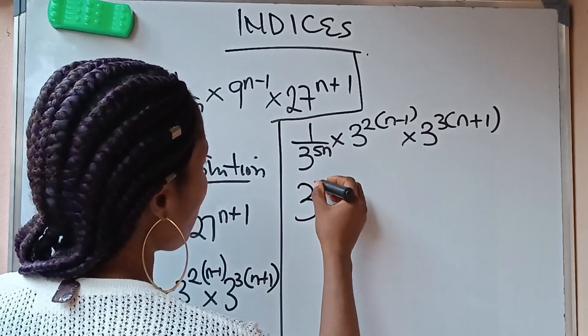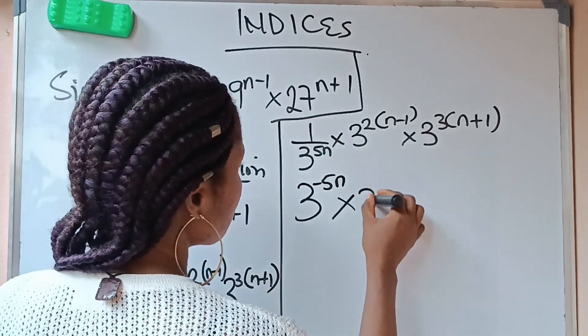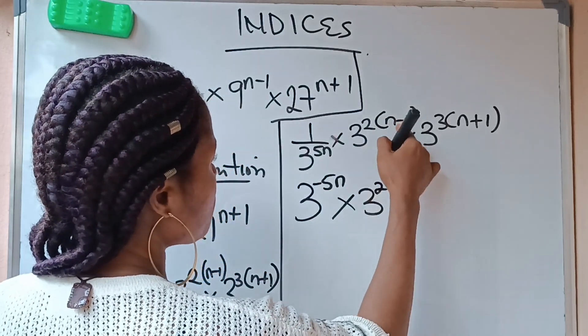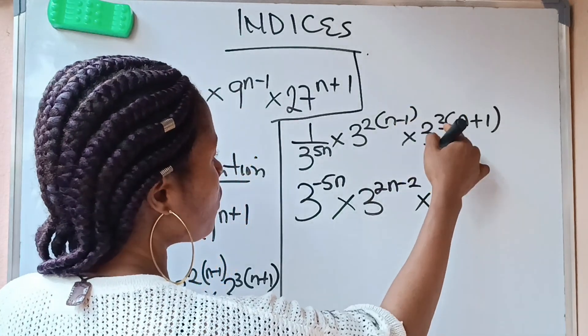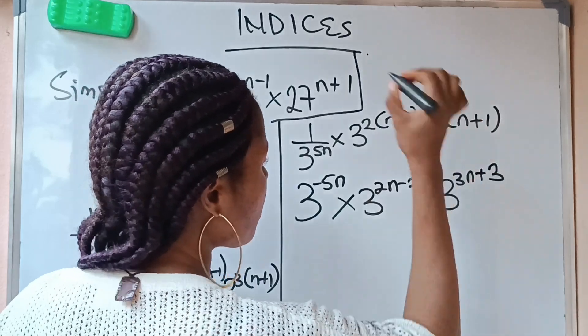So I'm going to write 3 raised to the power of minus 5n times 3 raised to the power of 2 times n will give me 2n, 2 times minus 1 will give me minus 2, times 3. 3 times n will give me 3n plus 3 times 1 will give me 3.